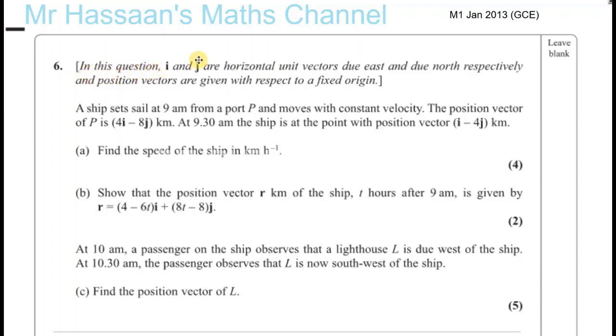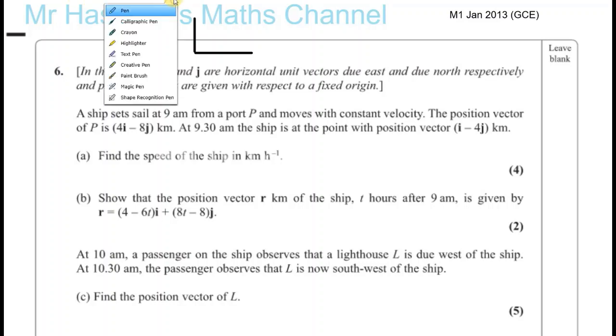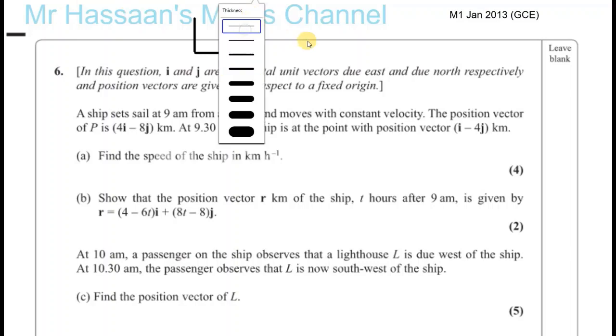In this question, i and j are horizontal unit vectors due east and due north respectively. Something which is east, which is in this direction, and j would be in this direction. They're both one unit long. That's i and that's j. I is east and j is north and they're both the same distance, one unit long. That's all that means.